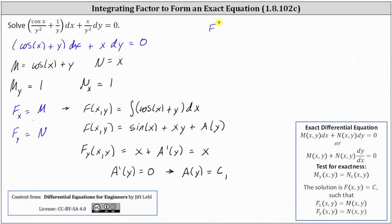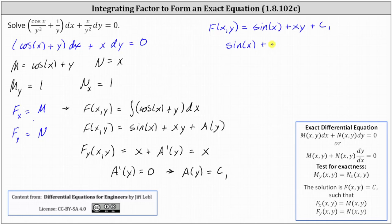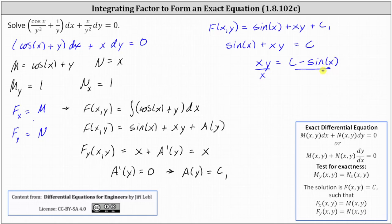We now know the potential function big F of x, y equals sine x plus xy plus c sub one, and the general solution is big F equals C. So the general solution is sine x plus xy plus c sub one equals c sub two. Subtracting c sub one from both sides and letting c sub two minus c sub one equal c gives us sine x plus xy equals c. To solve for y explicitly, we subtract sine x from both sides to get xy equals c minus sine x, then divide both sides by x, giving the general solution y equals the quantity c minus sine x divided by x.